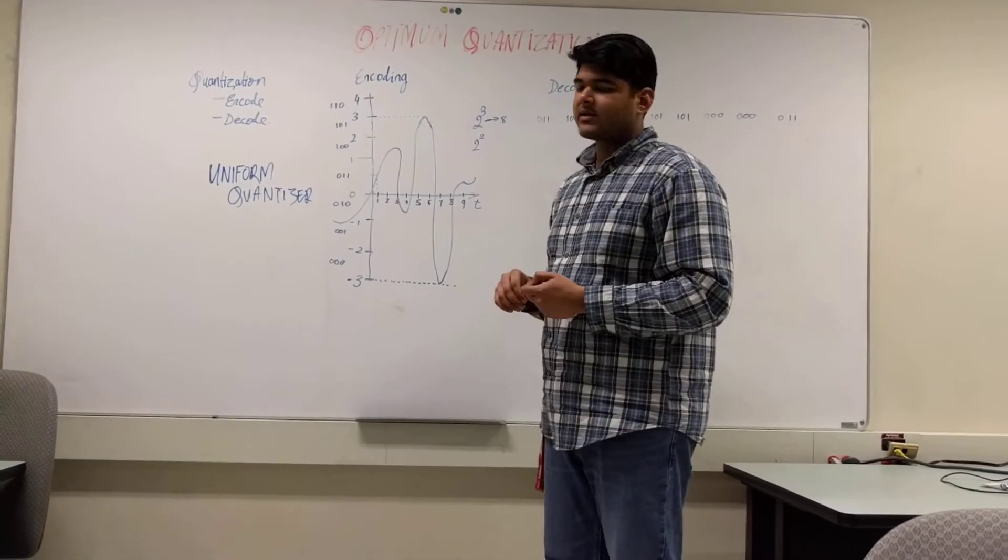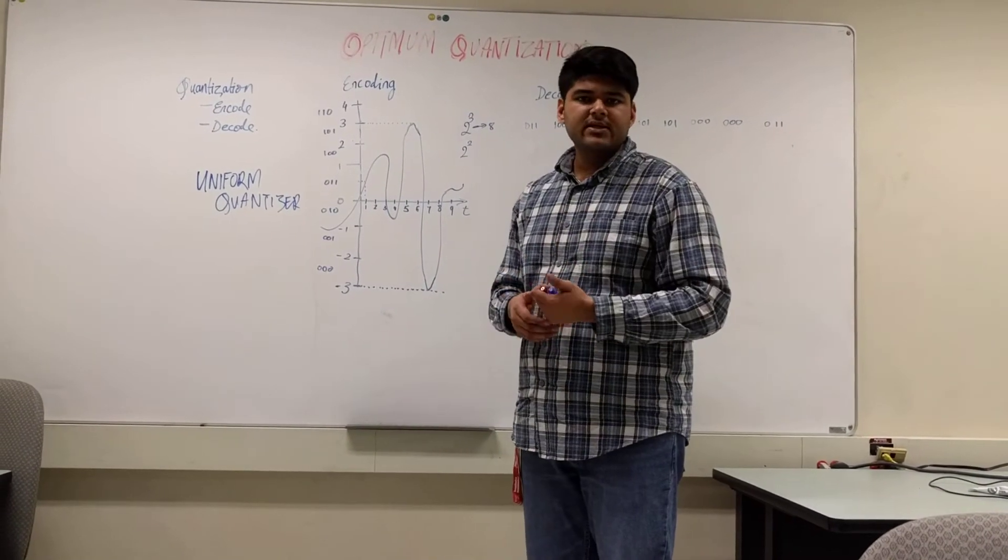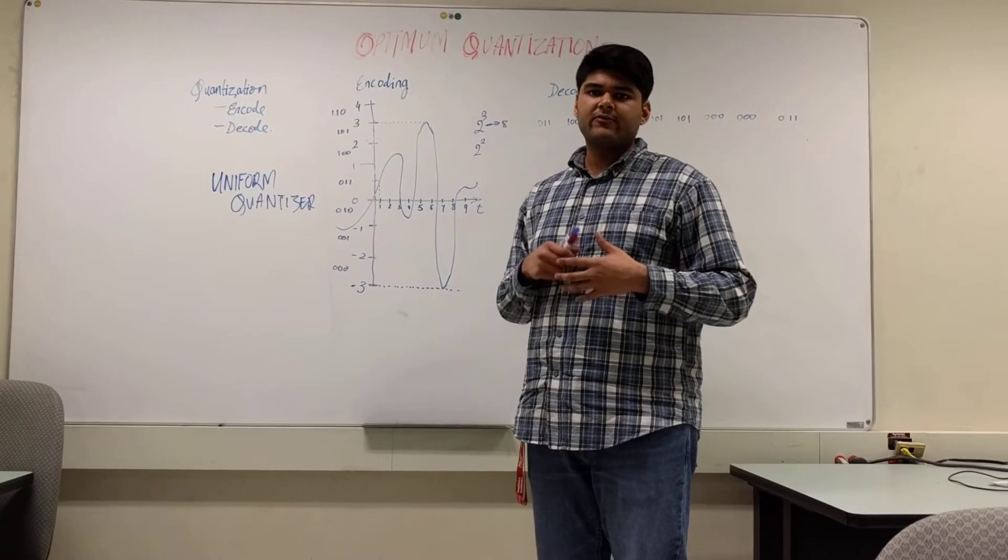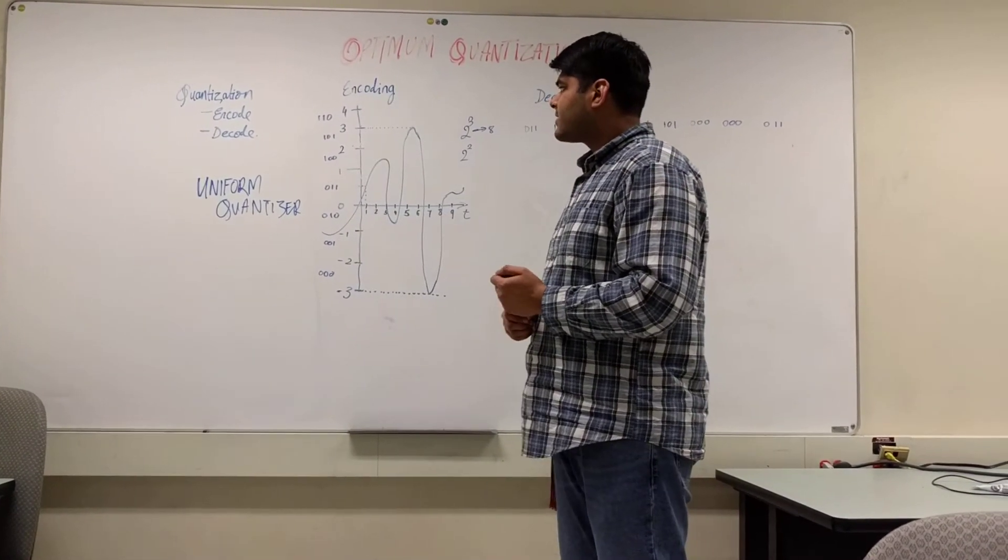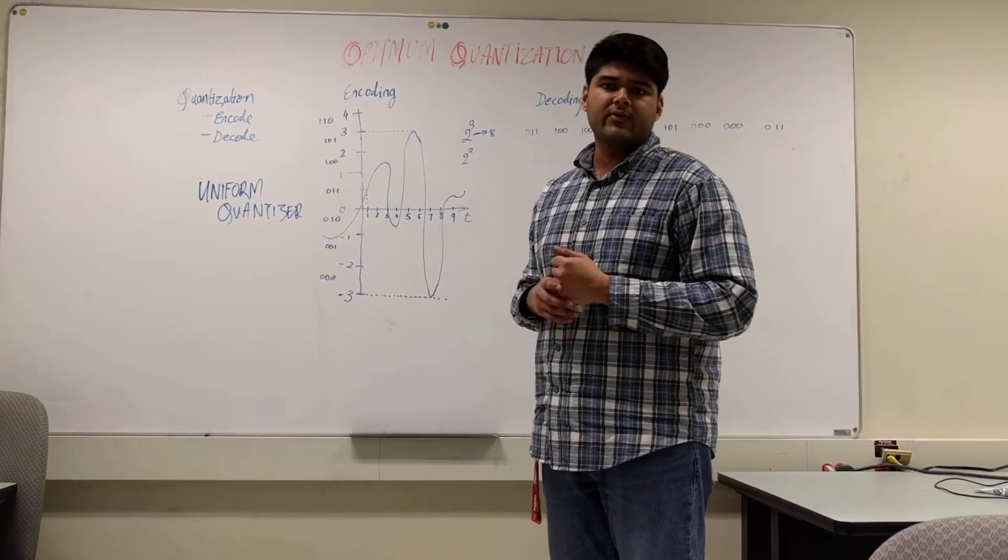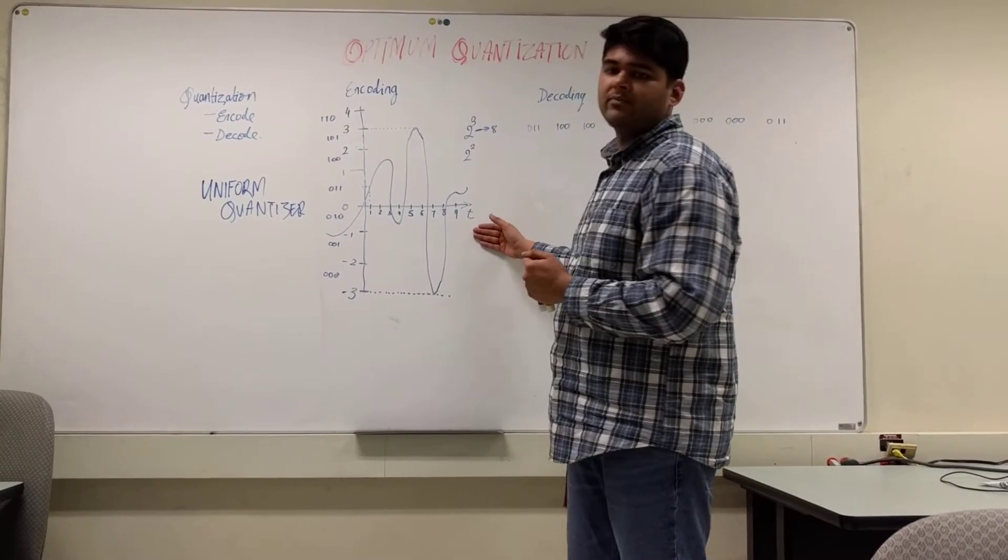Over here, we have a signal. It could be a sound signal, it could be an image signal, it could be any sort of signal. It's just a very generic idea of what a signal is. On the y-axis, we have the different frequency values or the different amplitude values of the signal. And on the x-axis, we have the time for the signal.